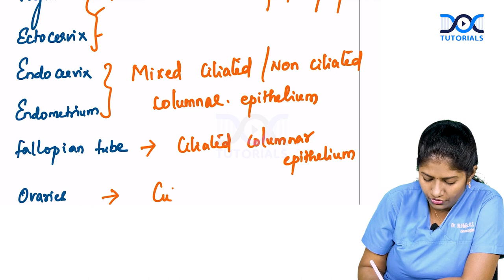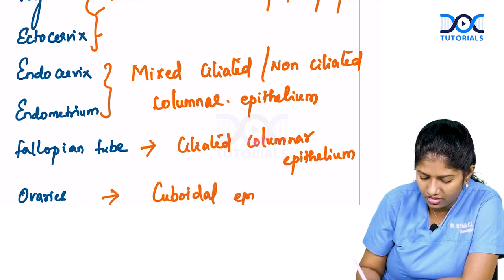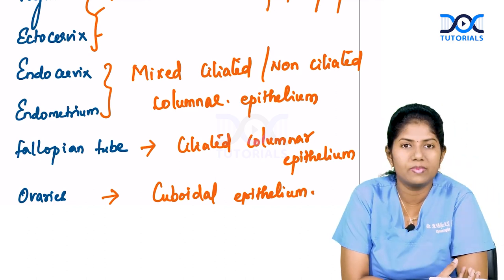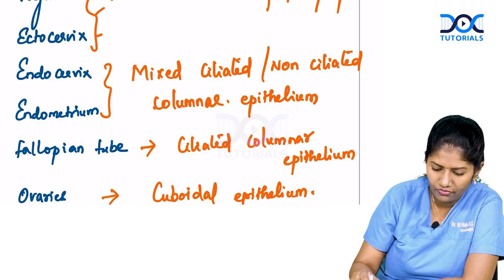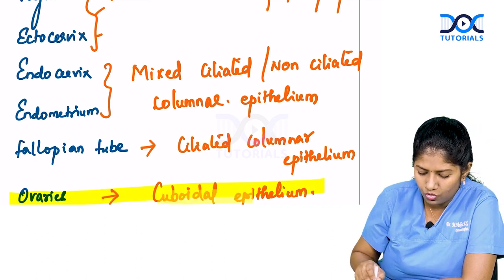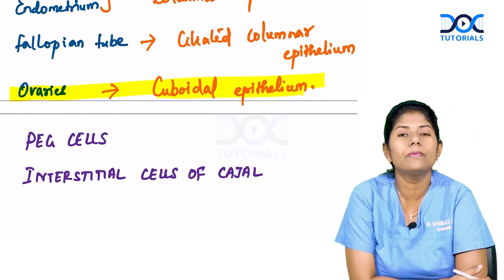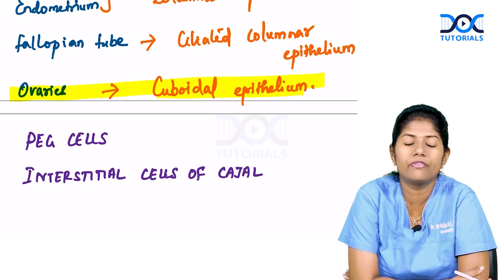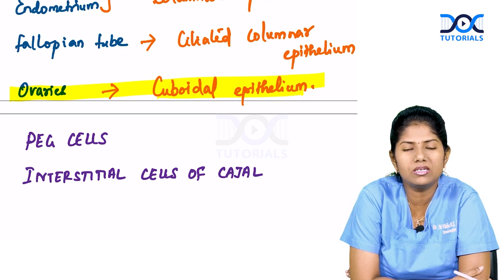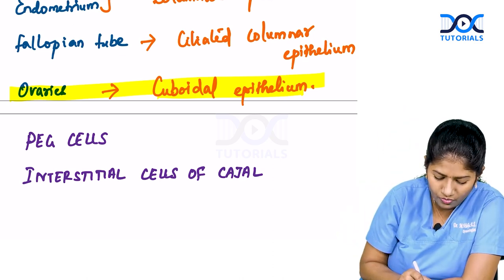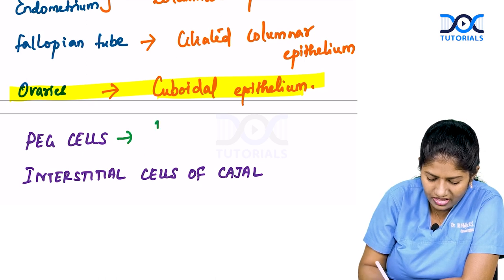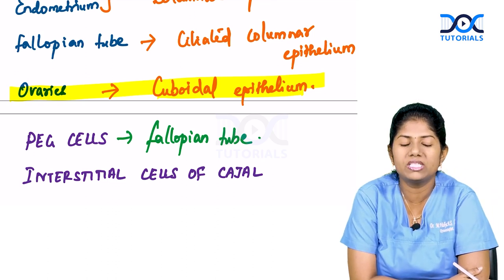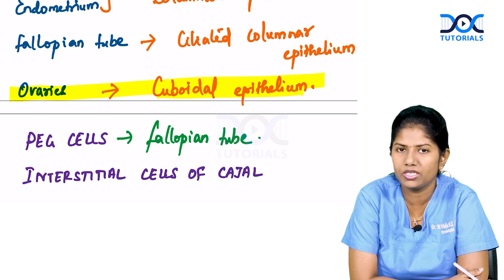The fallopian tube is lined by ciliated columnar epithelium. Ovaries are lined by cuboidal epithelium — this question was asked in the FMG exam about two years back. So the lining epithelium of ovary is cuboidal epithelium. Two more MCQs: what is a pex cell and where is it seen? Pex cells are specialized cells seen in the fallopian tube, present amidst the ciliated columnar epithelium. Their function is not yet known.